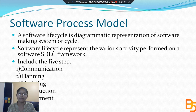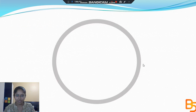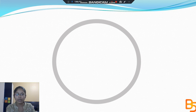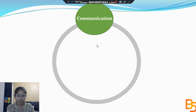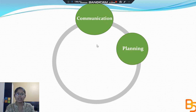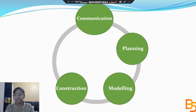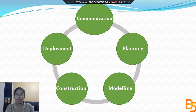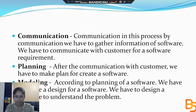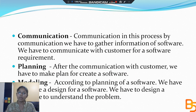There are 5 phases: Communication, Planning, Modeling, Construction, and Development. Let's see them one by one. This is the same cycle — first Communication, then Planning, Modeling, Construction, and Development. This is how the whole SDLC cycle works.